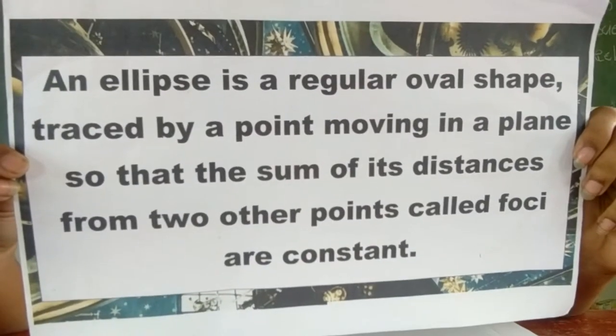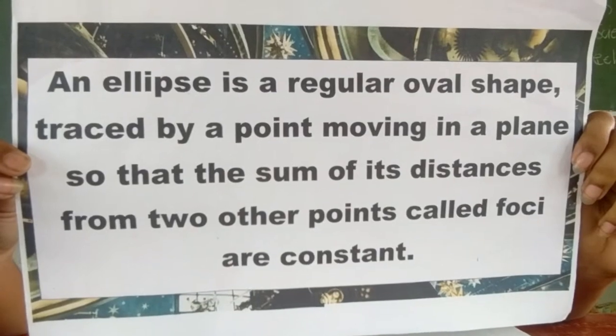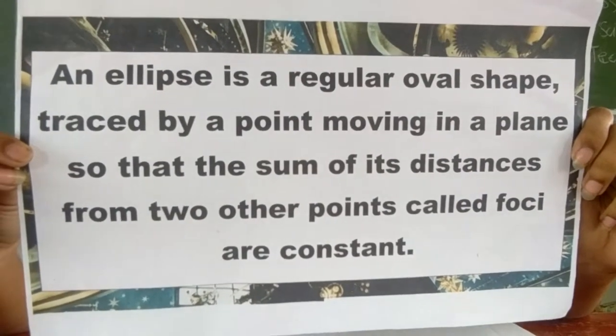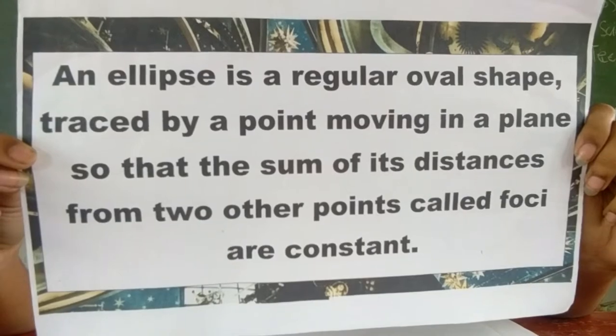Before we go deeper on discussing ellipses, let us first know what an ellipse is. An ellipse is a regular oval shape traced by a point moving in a plane so that the sum of its distances from two points called foci are constant.